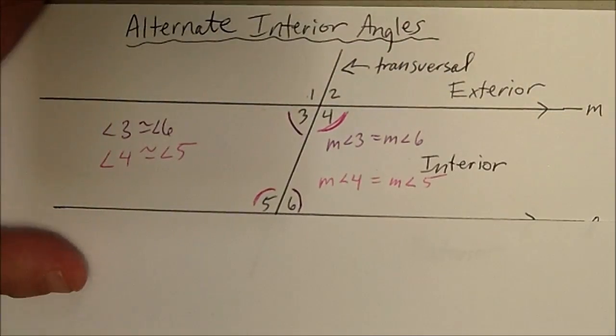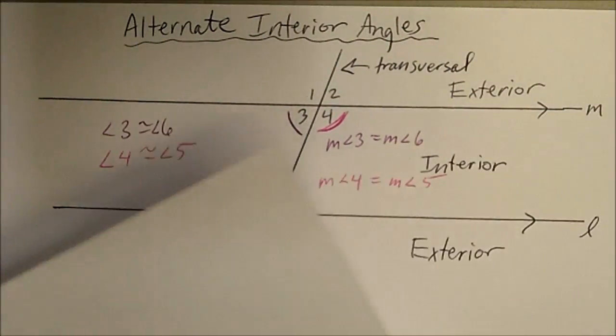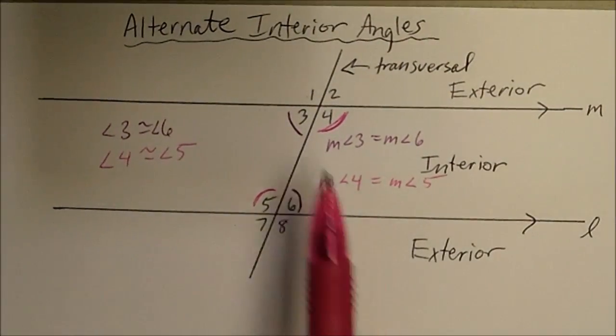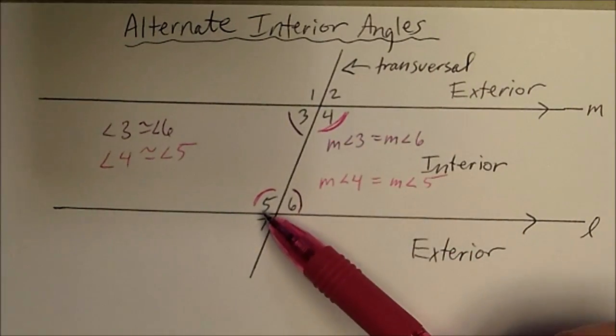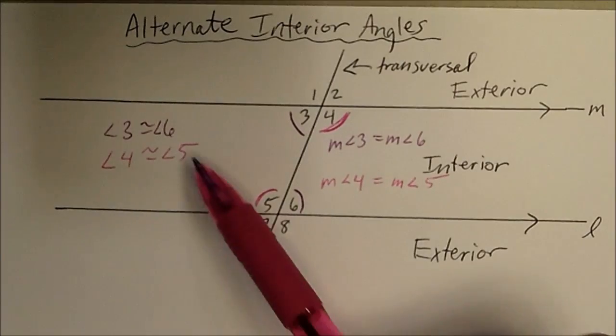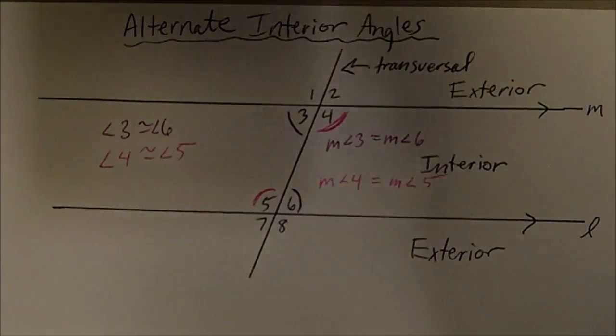Let's uncover the exteriors and realize that we are looking at alternate interior angles, with four and five that are congruent and three and six that are congruent.